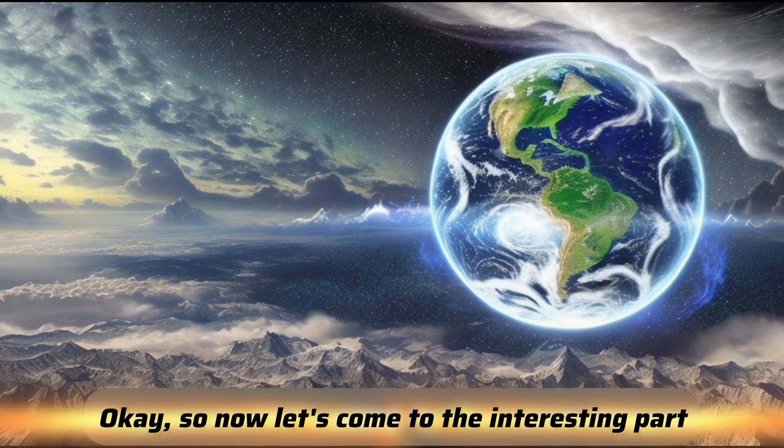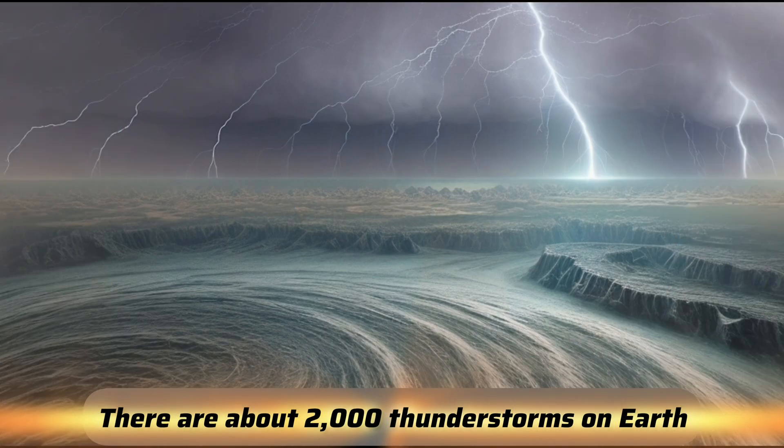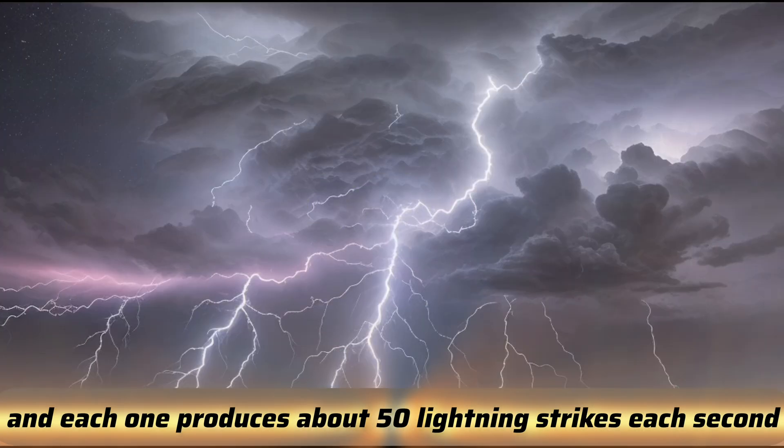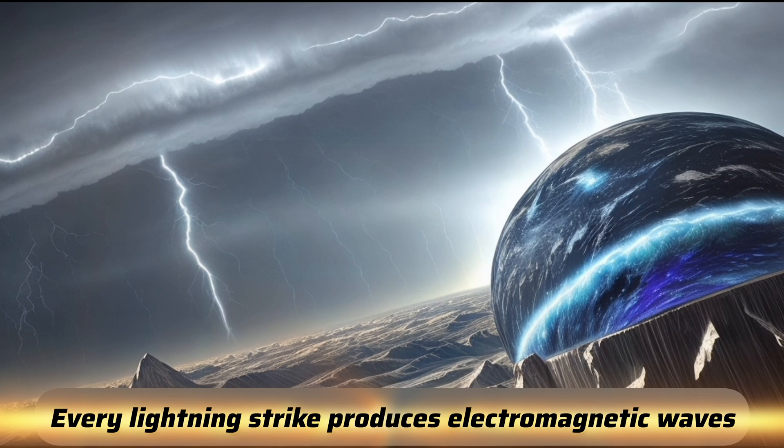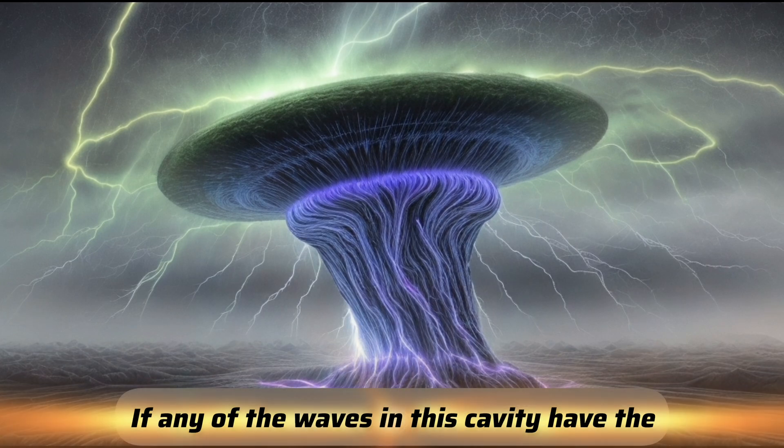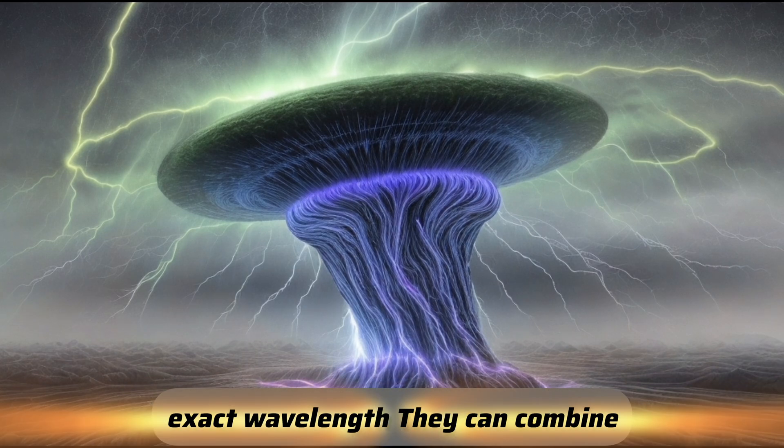Okay, so now let's come to the interesting part. There are about 2,000 thunderstorms on Earth at any given time, and each one produces about 50 lightning strikes each second. Every lightning strike produces electromagnetic waves that start to travel 60 miles above Earth, between the ionosphere and the surface.